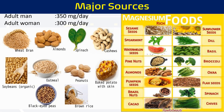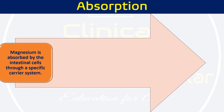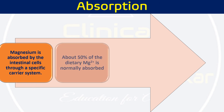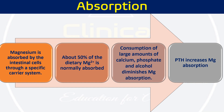The major food sources of magnesium are wheat bran, almonds, spinach, cashews, soybeans, oatmeal, peanuts, brown rice, and peas. Regarding absorption, magnesium is absorbed by intestinal cells through a specific carrier system. Roughly 50% of dietary magnesium is absorbed and 50% is excreted through feces. Consumption of large amounts of calcium, phosphate, and alcohol reduces its absorption. Parathyroid hormone (PTH) increases magnesium absorption, similar to calcium.